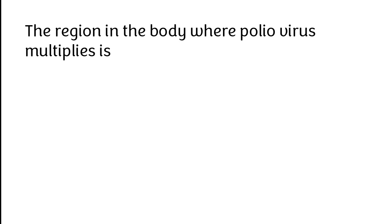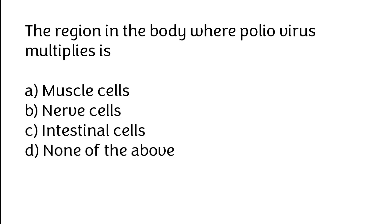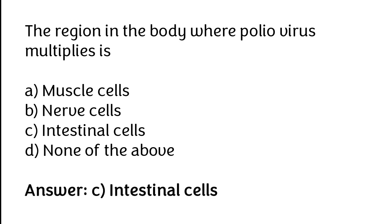The region in the body where folio virus multiplies is: A) Muscle cells, B) Nerve cells, C) Intestinal cells, D) None of the above. The correct answer is option C — the region where folio virus multiplies is intestinal cells.